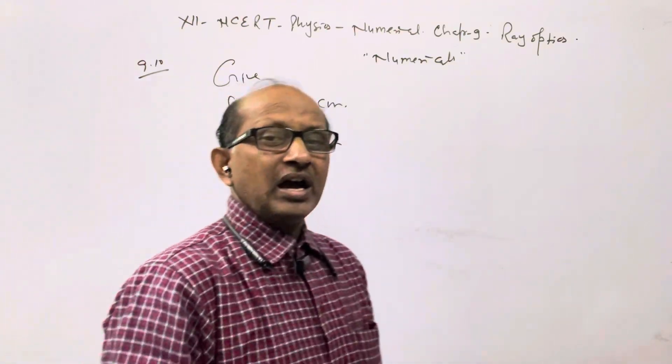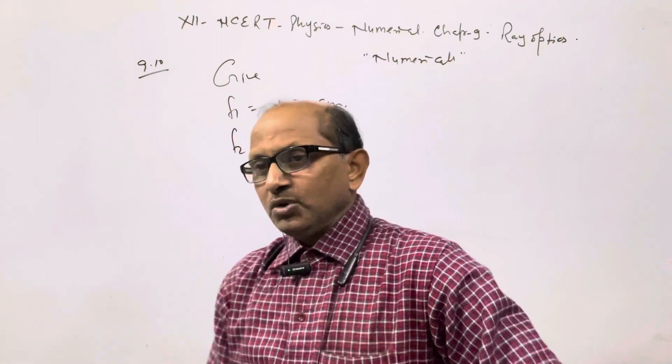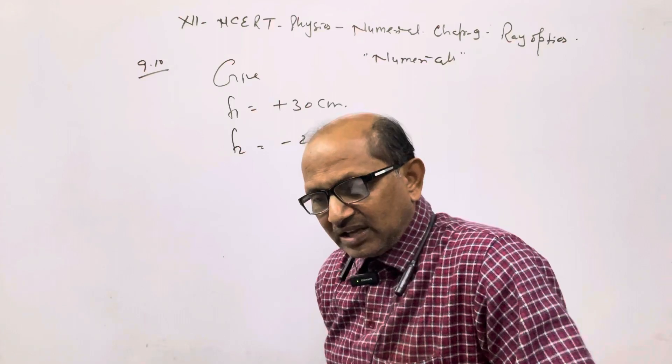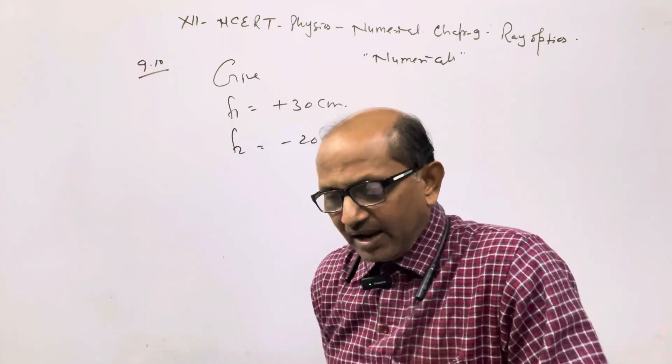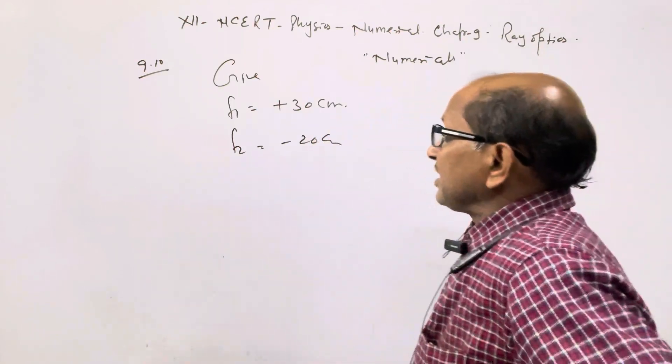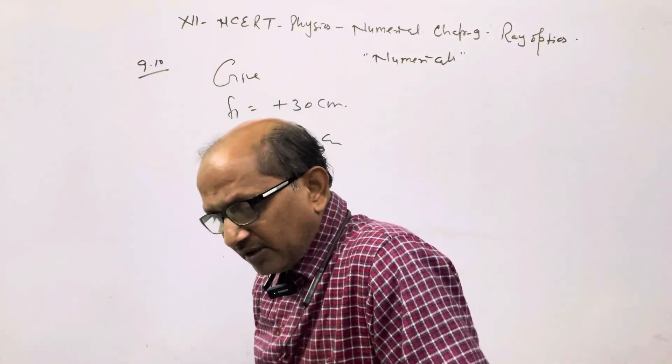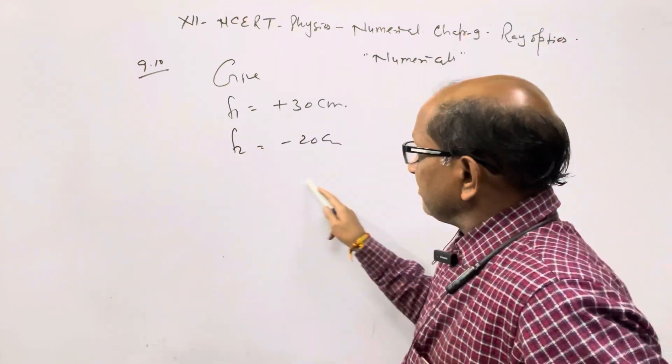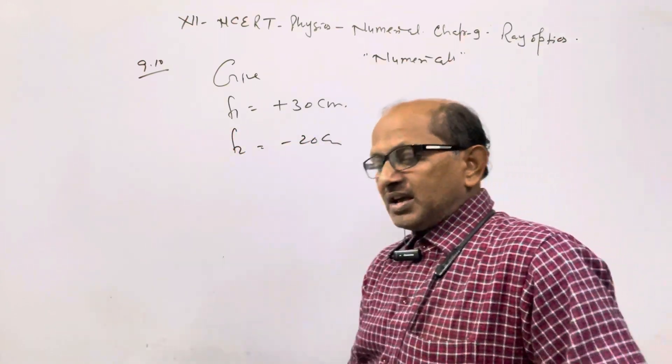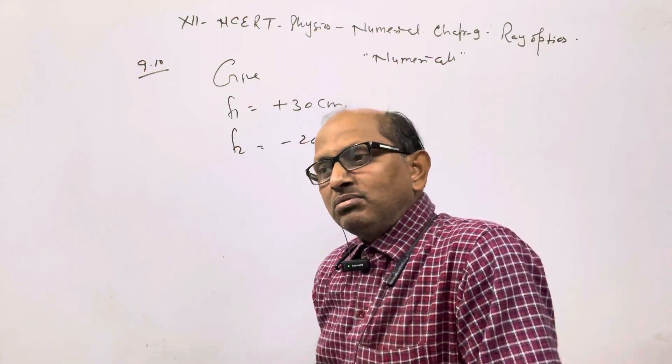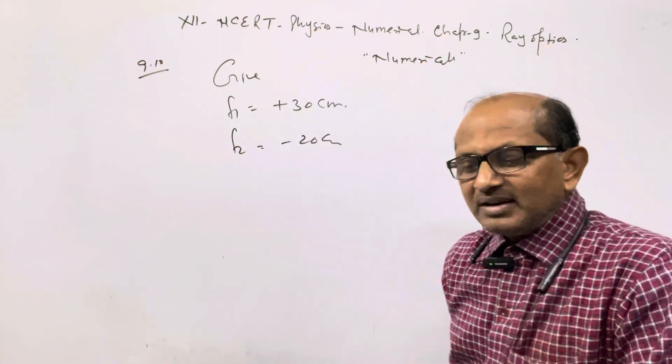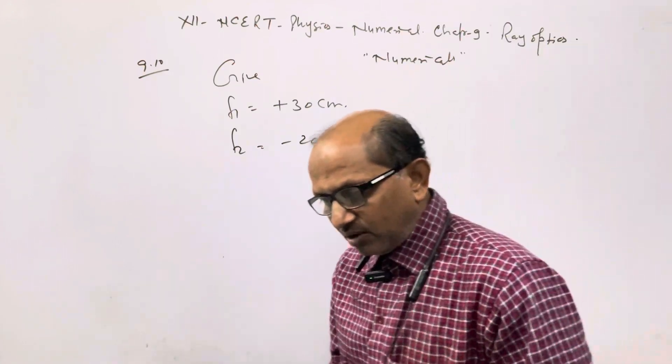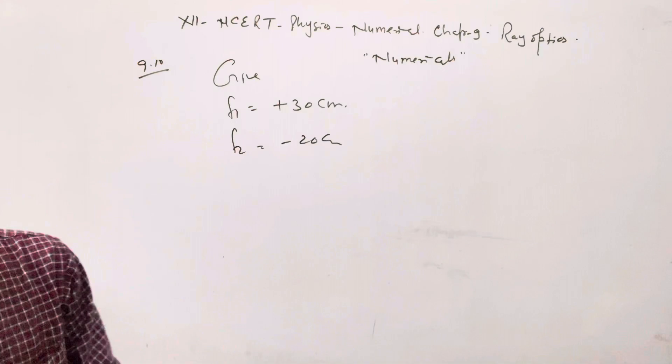If we solve this numerically, we can determine which power will dominate. The power is inversely related to focal length - if the focal length is lower, the power is higher.